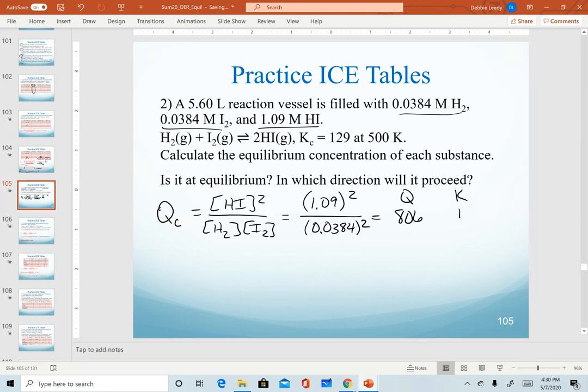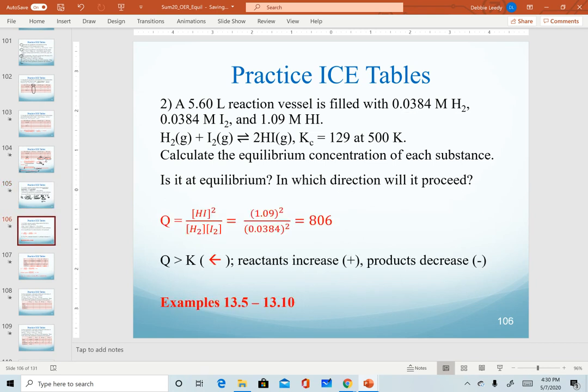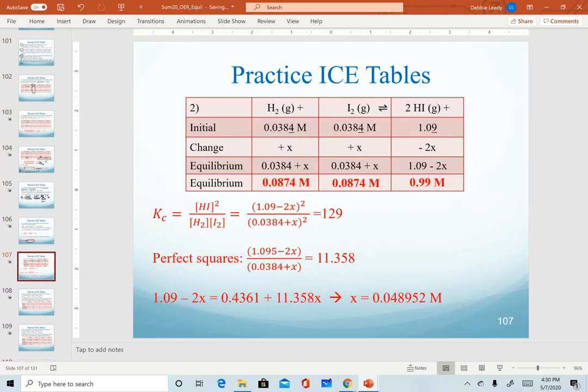We just want Q for relative purposes. So if we misrounded, not the end of the world, but we do see that Q is larger than K. That means Q needs to decrease. That means products decrease while reactants increase. In other words, this reaction is going in the reverse direction. On this slide in your notes, we have all of that information and a good time to point out relevant examples in the textbook in OpenStax 5 through 10, working through extra ICE tables.